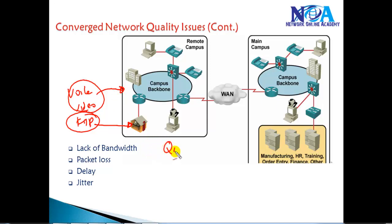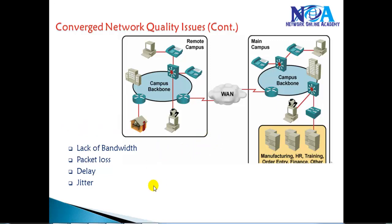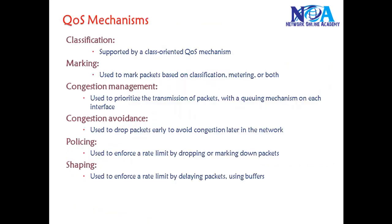To overcome these things, we can implement QoS mechanisms which will ensure that we give some priority for specific types of traffic. The major problem with the network is a lack of bandwidth. Packets get dropped or delayed because of the lack of bandwidth, and there is a possibility that your packets get dropped as well. Delay and jitter are the general issues we have with converged networks. We'll see the different QoS mechanisms we can use to overcome those things.